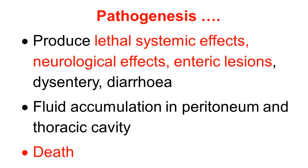Toxemia and septicemia produce enteric lesions and have lethal systemic effects. There are neurological symptoms, along with dysentery and diarrhea. There is fluid accumulation into the peritoneum and thoracic cavity, and ultimately death of the animal due to severe toxemia and septicemia.